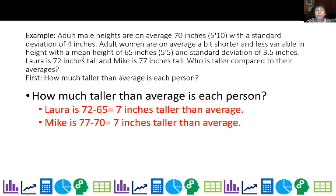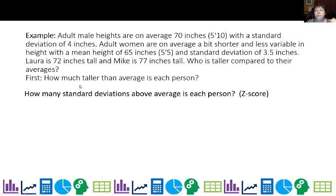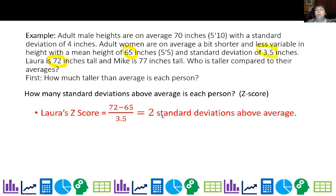But what I really need to do is take into account spread because like the heights of males, we have a broader range. So it's not that unusual to be a little further out the heights for females. We tend to be a little bit more compressed on that spread. So what we're going to do is figure out how many standard deviations above average each person is. So I'm going to take for Laura, for example, she's 72 inches tall. The mean is 65 inches. So she's seven inches above average, but I want to convert that to standard deviation. So I'm going to actually divide by that 3.5, which gives me this.